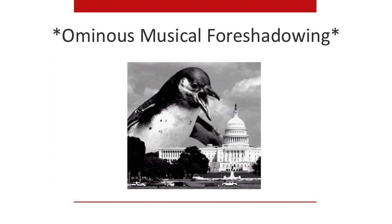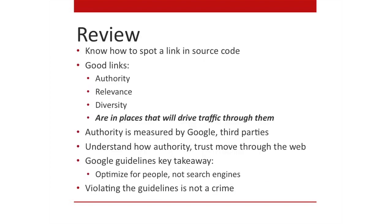If you're going to violate the Google guidelines, you might run into a giant penguin trying to eat the US Capitol — referring to Google's Penguin algorithm. Segment review: know how to spot a link in source code; good links have authority, relevance, diversity, and drive traffic. Authority should be a bonus — we really want people to click through links. Authority is measured differently by Google and third parties. Understand how authority moves through the web. A key takeaway from the Google guidelines: optimize for people, not search engines. Violating the guidelines is not a crime.